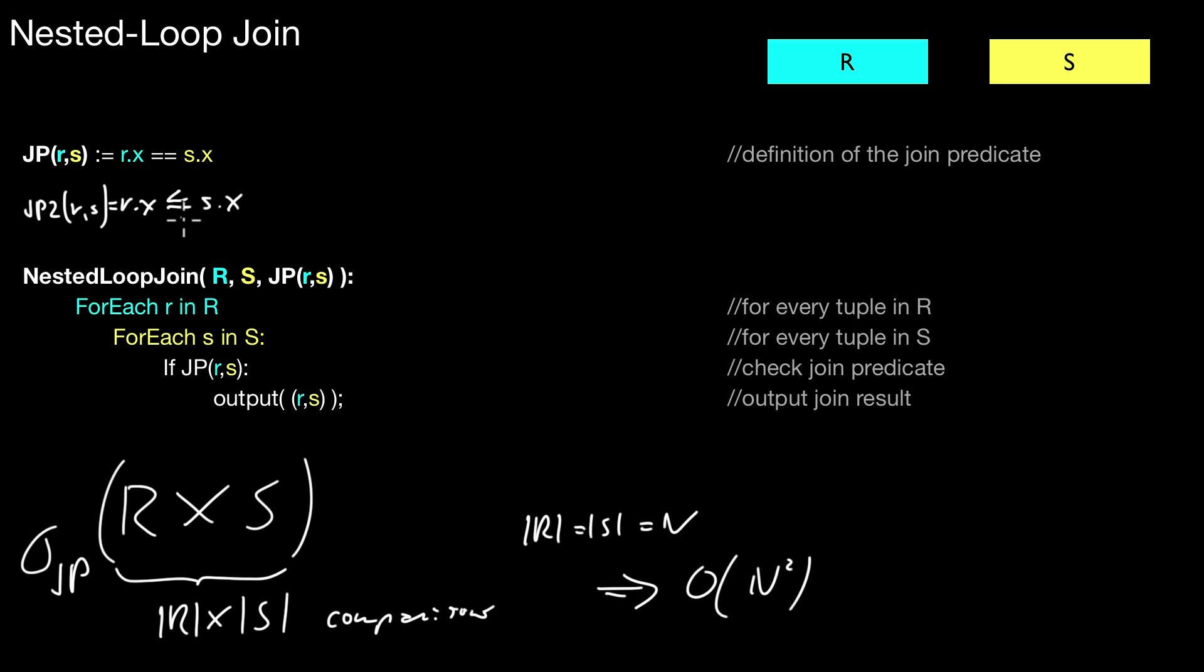Which means nested loop join can always be applied. This is something that always works, not only for equi-joins like here, but also for other conditions. And this is not necessarily true for other join algorithms. Okay, so this is nested loop join. Keep this in mind. Be careful with this. However, it works in many situations, especially for small inputs and for arbitrary join predicates. This is a great choice.